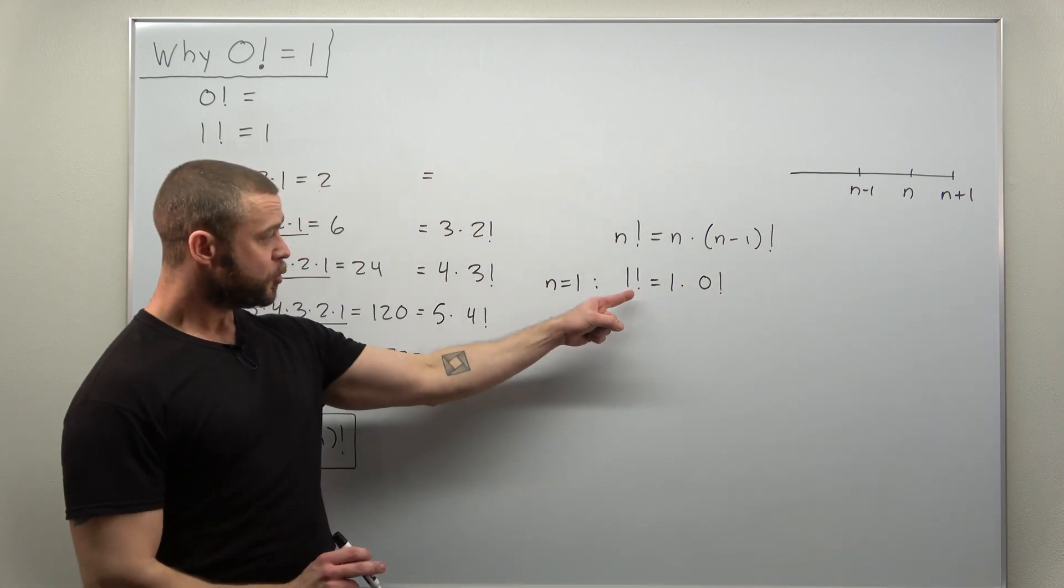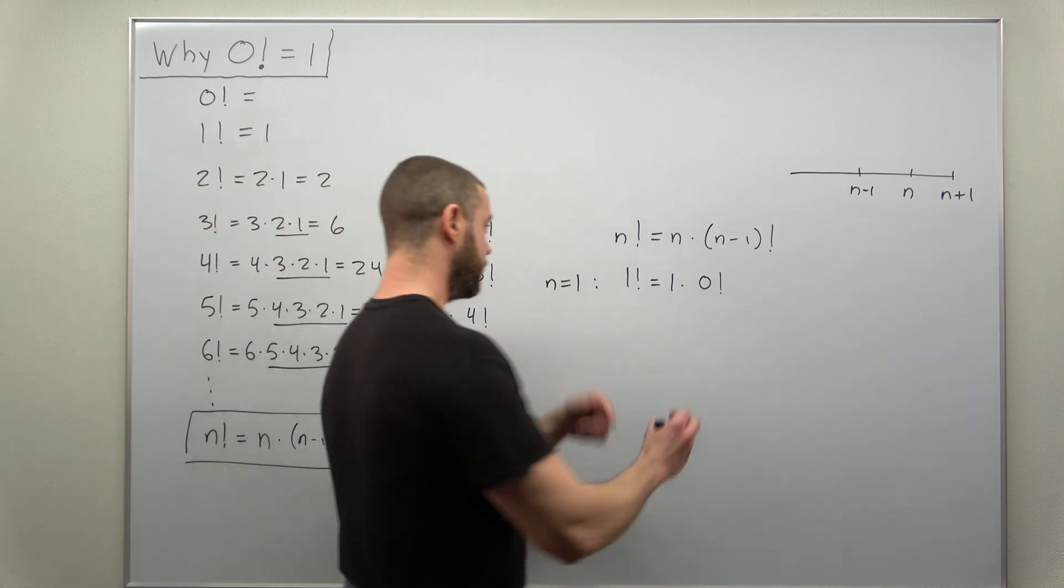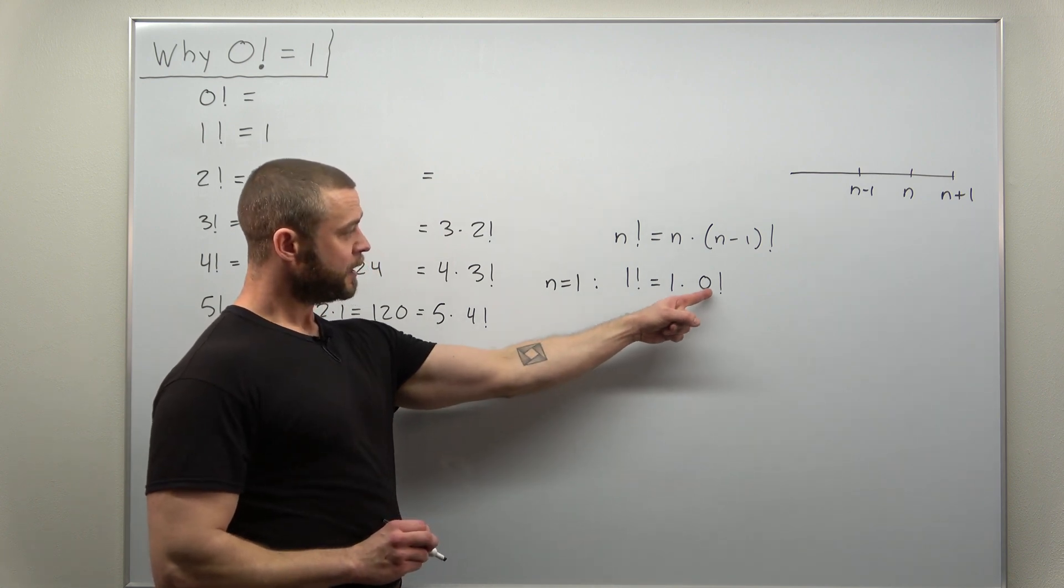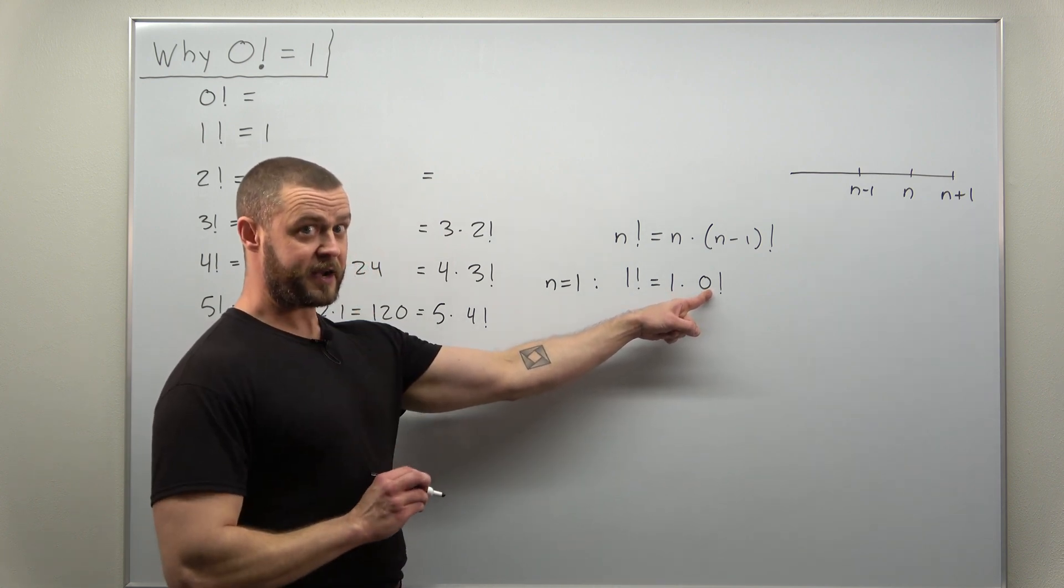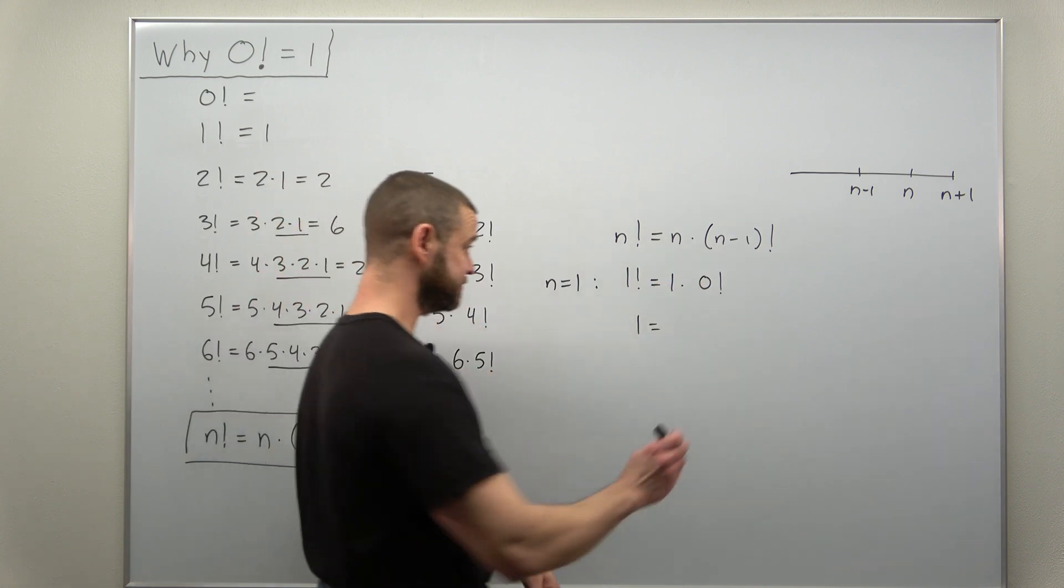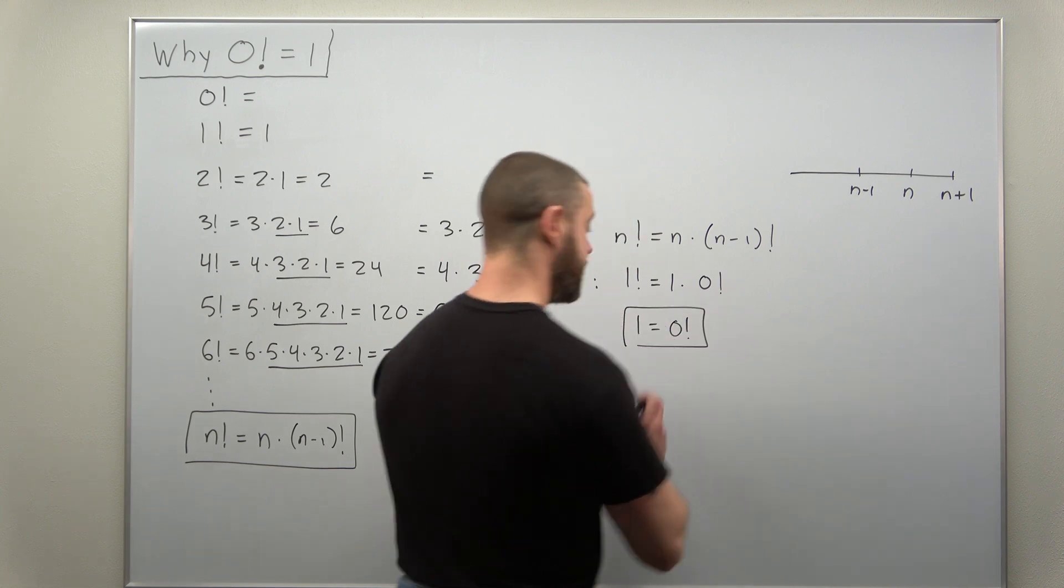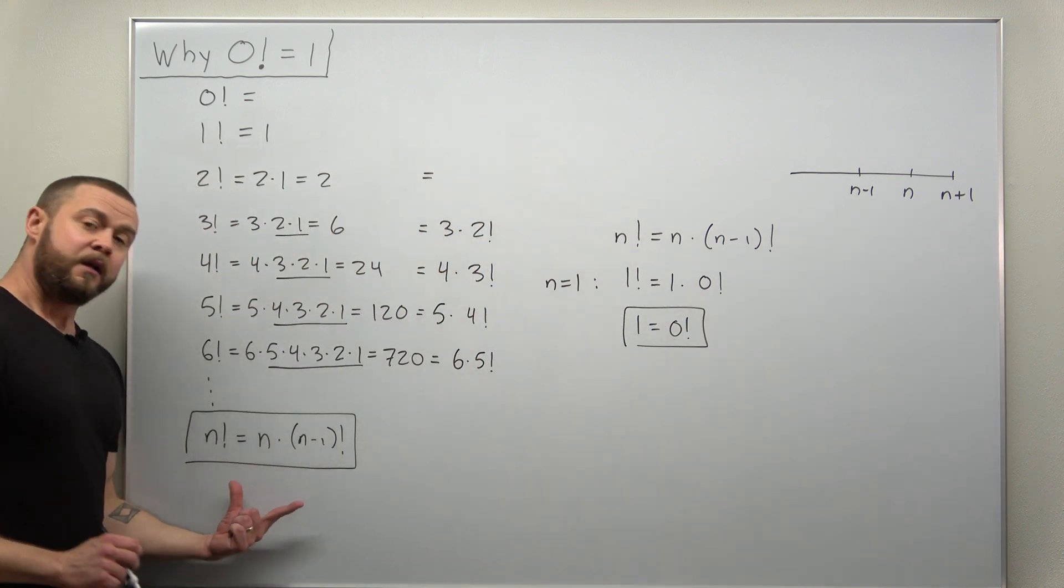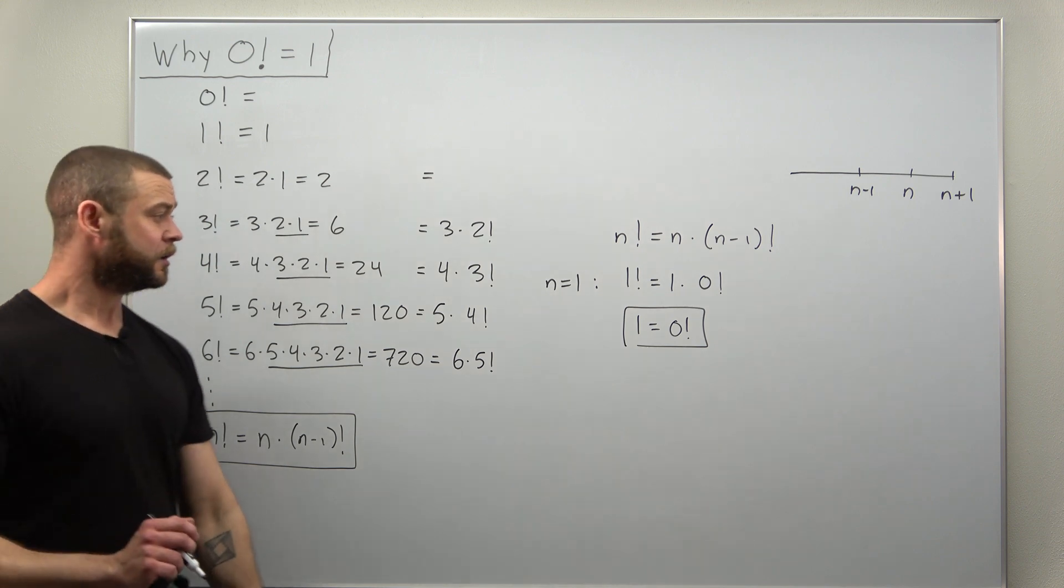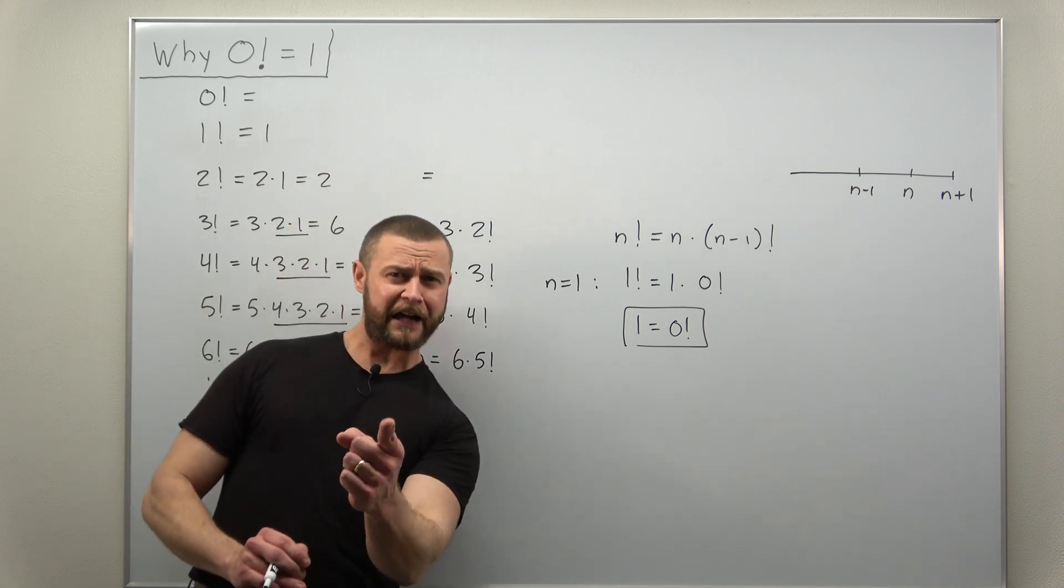And fortunately we do know the value for one factorial, which is one. So if we write this out, the left side is one. The right side is zero factorial times one, which is just zero factorial. And what we find is that in order for this property to continue to hold, we have to define zero factorial as one.